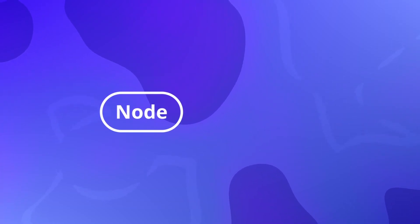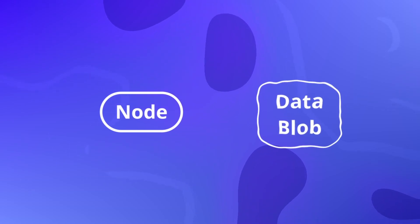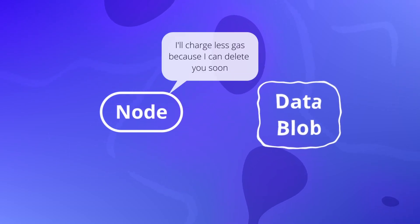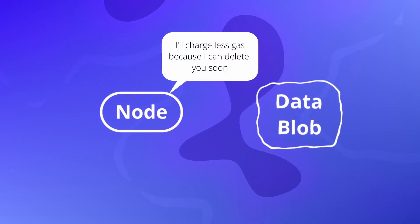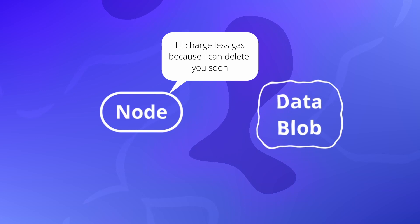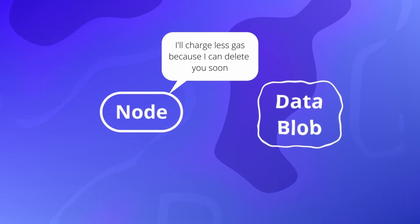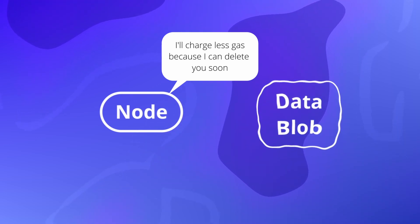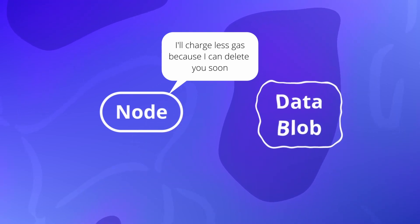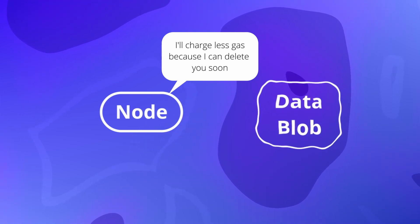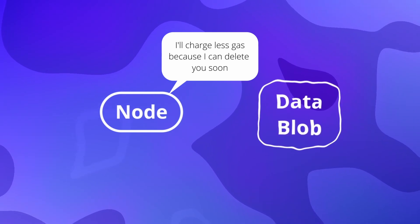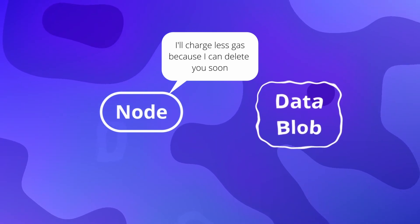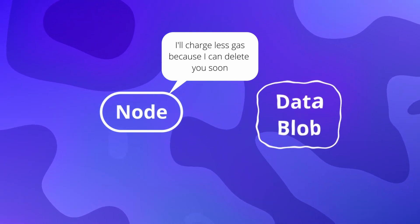Ethereum with Proto Dank Sharding will also introduce a new data type called a data blob, which will be cheaper to use as nodes only need to store data blobs for 30 days. Nodes are only interested that rollup nodes have made the data available — they don't need to store it for the rest of time — so data blobs should make rollups much cheaper on Ethereum once implemented.